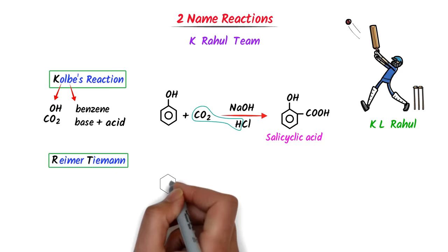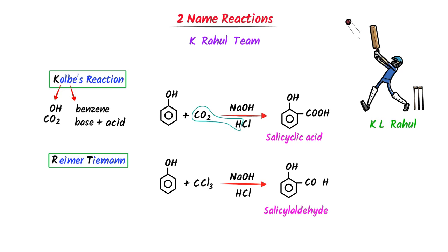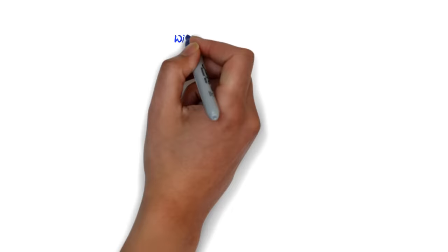In the Riemer-Tiemann reaction, I rewrite the above (Kolbe's) reaction. I cut this O2 and the oxygen of COOH, then replace only the O2 by Cl3. We get a new substance called salicylaldehyde. This is the Riemer-Tiemann reaction.